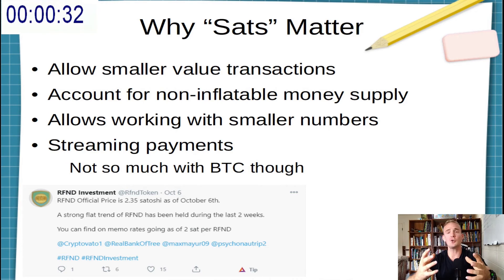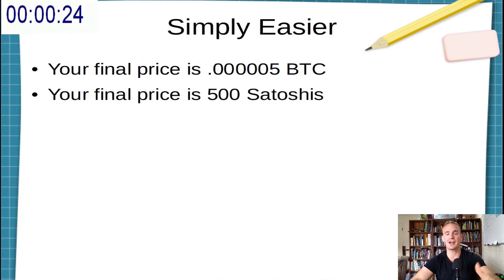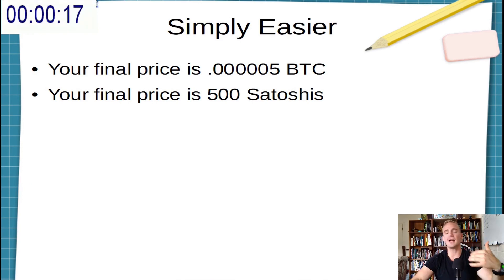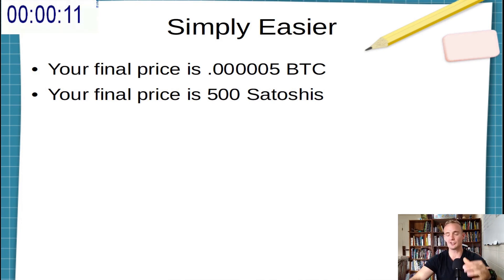Lastly, Satoshis are typically used as a form of translation for lesser well-known cryptocurrencies. So for cryptocurrencies that have a very, very low price, instead of saying one unit of Refund Token is 0.0000005 Bitcoin, they might just say something like one Refund Token is equal to 500 Satoshis. So it's just an easier way of keeping track of things.